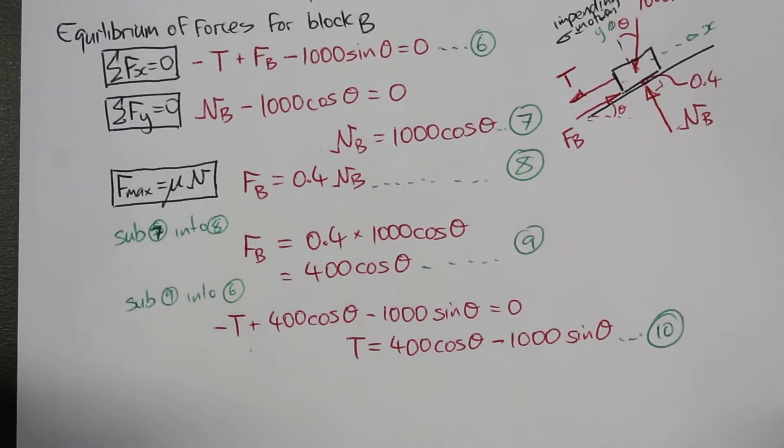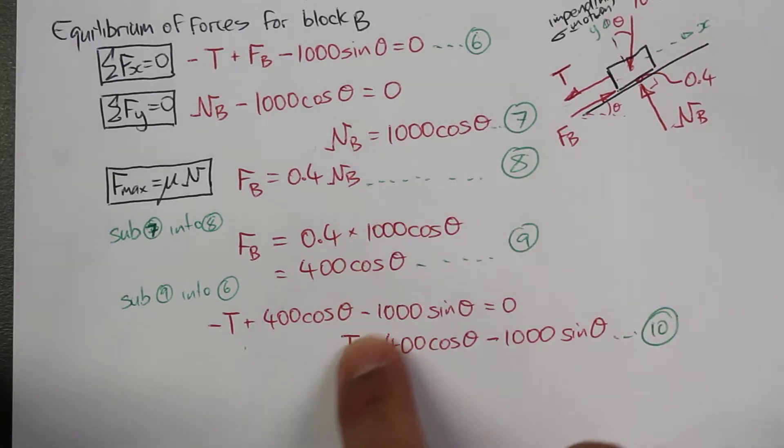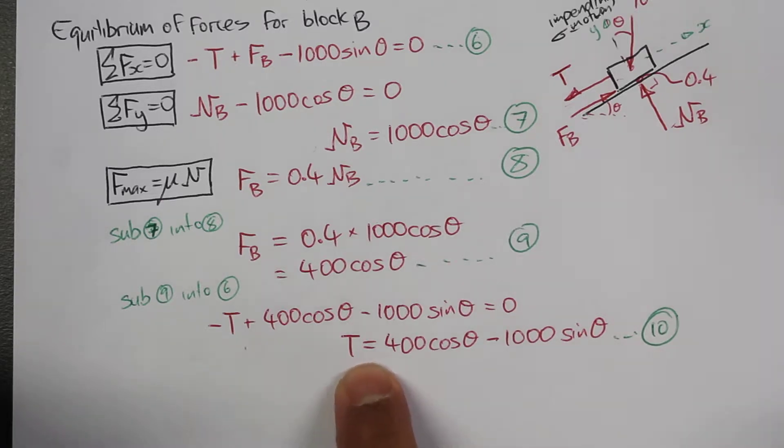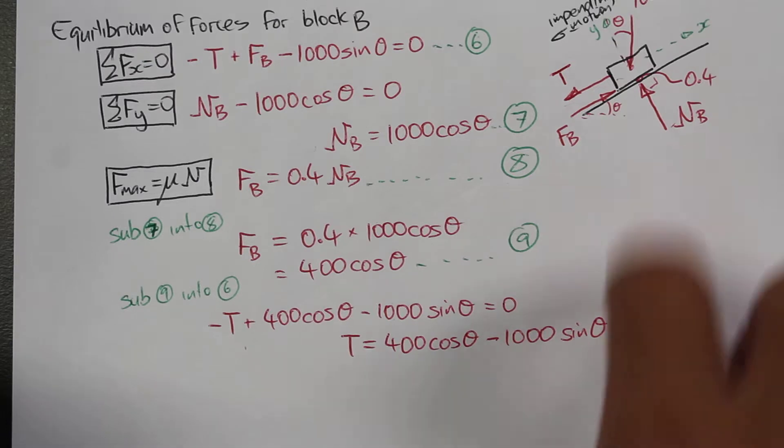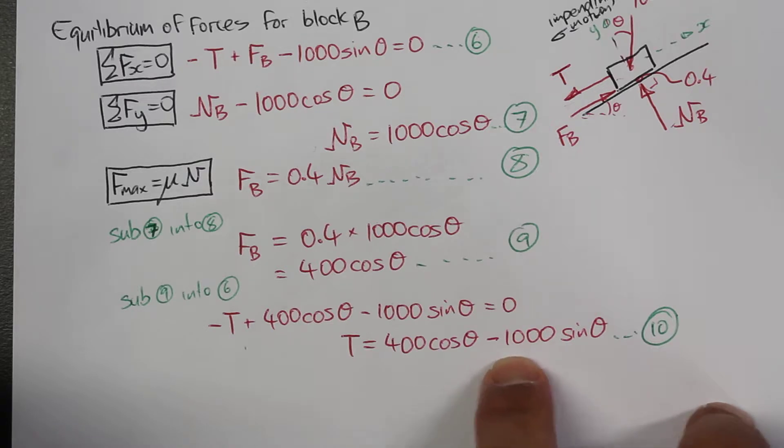We've also done a free body diagram for block number B, and from that, come to an equation for T as well: T equals 400 cosine theta minus 1000 sine theta. Now in this next part, we'll equate equation 5 and equation 10 to each other. This will give us a way to calculate theta, and then by calculating theta we'll be able to calculate T. So let's go.